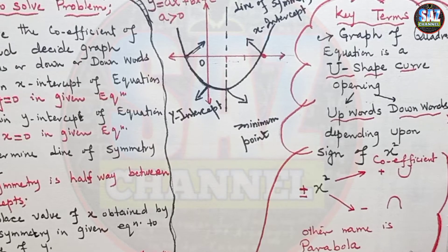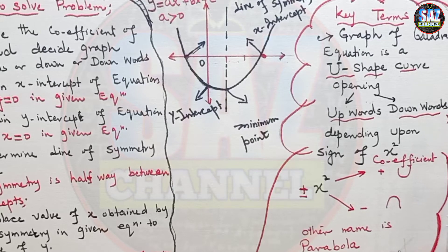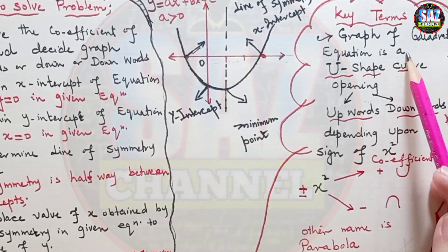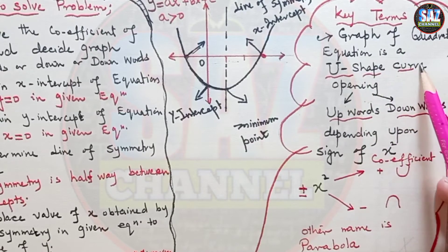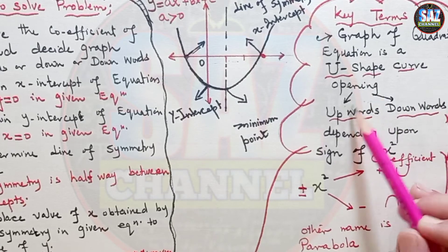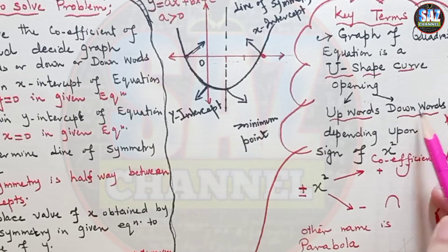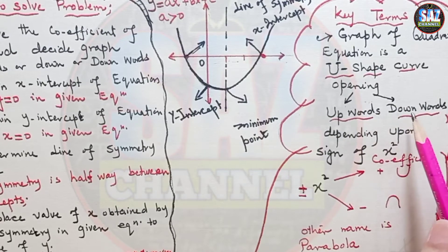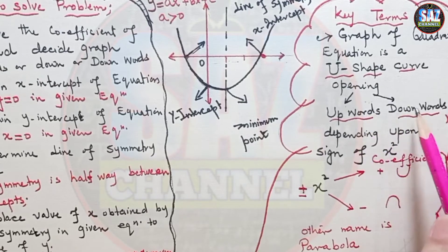graphs of the linear equations were straight lines. When we talk about the graph of the quadratic equation, it's a U-shaped curve and either it can have the opening upwards or downwards. What will tell us the quadratic equation and the graph will have the opening upward or downward?